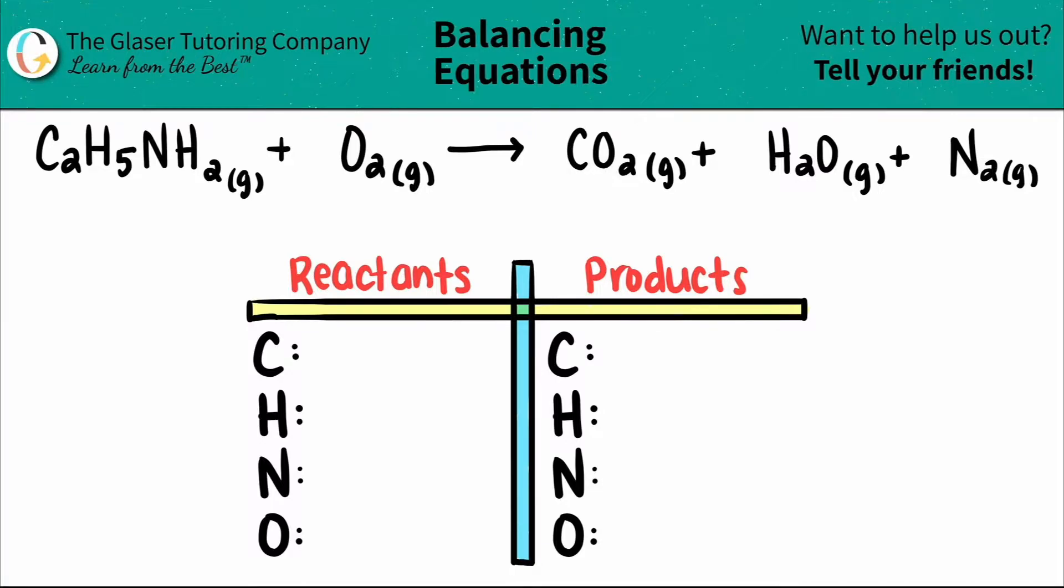Today we are going to be balancing the equation of C2H5NH2 plus O2, which will give us carbon dioxide CO2 gas, plus water H2O, and then plus nitrogen gas N2.